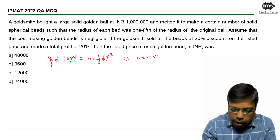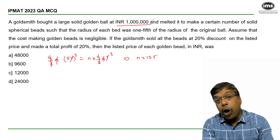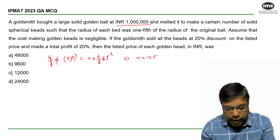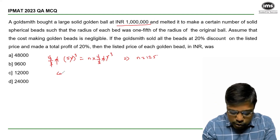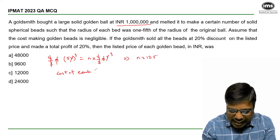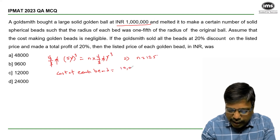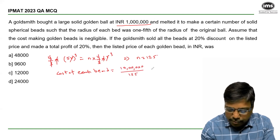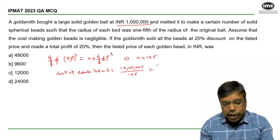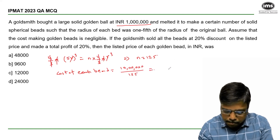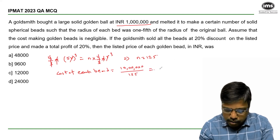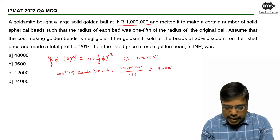Now the total cost of the ball earlier is 10 lakhs. So the cost of each spherical-shaped bead is 10 lakhs divided by 125, which is equal to 8000. So this is the cost price.